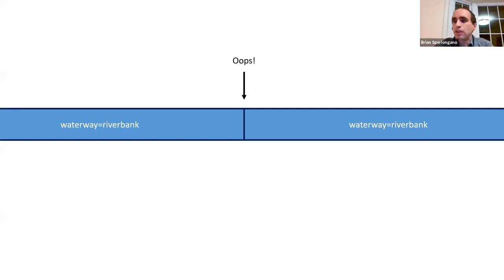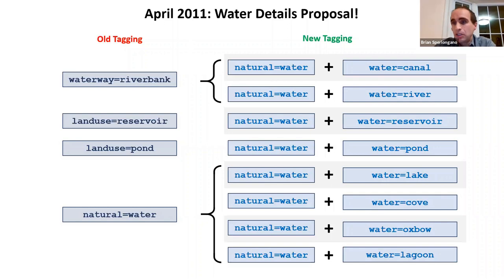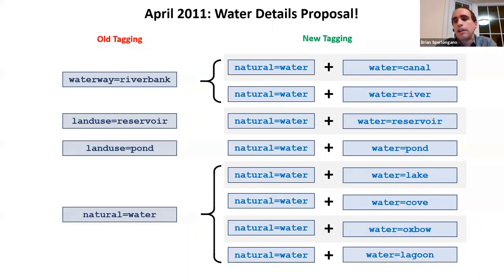Fast forward to 2011: a Russian mapper invented a new key called water=*, which let mappers tag the type of water represented by a natural=water tag. At that time, the riverbank tag covered both rivers and canals, but the new water tag let you distinguish them. So landuse=reservoir became water=reservoir, landuse=pond became water=pond, and the whole list of water tags familiar today was born.